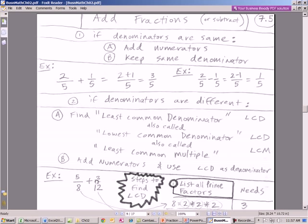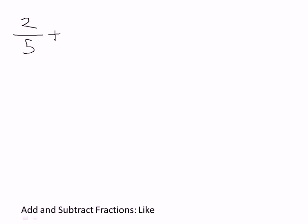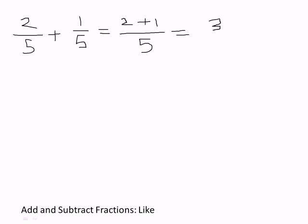We're going to start and look at how to do this stuff by hand. Our first topic is adding and subtracting fractions that like each other. Here's a fraction: 2 fifths. And by the way, the rules for adding and subtracting fractions are the same. We're going to add 1 fifth. These fractions have the same denominator, and here's the rule: you simply add the numerators. So this becomes 2 plus 1 divided by 5, which equals 3 fifths.